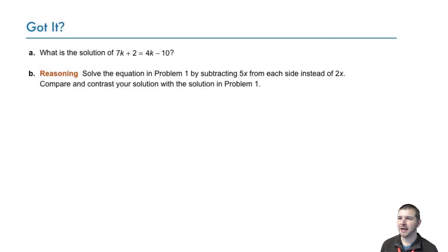Your turn, part A. What is the solution of 7k plus 2 equals 4k minus 10? And part B, a reasoning item, solve the equation of problem 1 by subtracting 5x from each side instead of 2x. Compare and contrast your solution with the solution in problem 1.